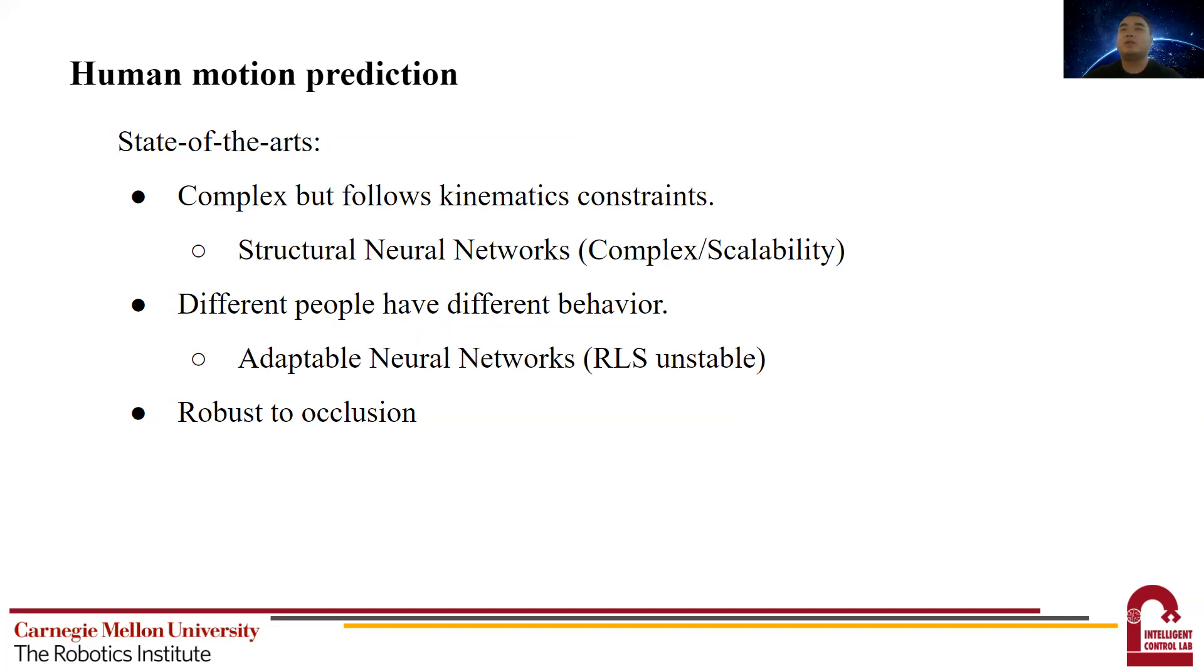In order to account for individual differences in motion behavior, there are works using adaptable neural networks. Most of the works use recursive least squares, which we observe might be unstable in the motion prediction context. Unfortunately, to the best of our knowledge, we didn't see any works that specifically consider the occlusion problem.